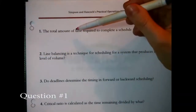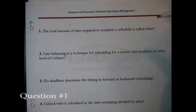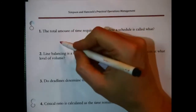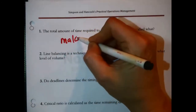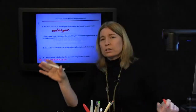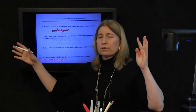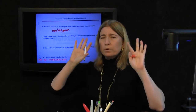Question 1: The total amount of time required to complete a schedule is called what? It's Make Span. Irregardless of what technique you use to create the schedule, the total amount of time from start to finish to get whatever is being arranged in the schedule done is known as its Make Span.